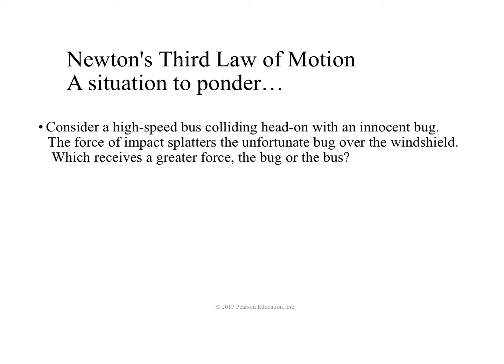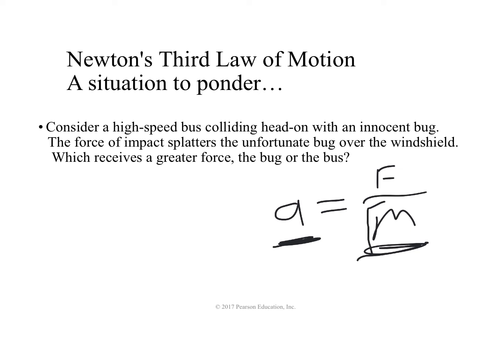But it turns out that's not true. The answer is that both the bug and the bus get the same amount of force — it's a trick question. Newton's third law tells us the bug is pushing against the windshield, and the windshield pushes back against the bug with an equal and opposite force. So why does the bug go splatter while the bus doesn't even notice? It's all about acceleration. Acceleration equals force over mass. The bus has such a big mass its acceleration is tiny. The bug, on the other hand, has a very small mass, so dividing by a small number makes the acceleration very, very big — enough to literally splatter the bug.